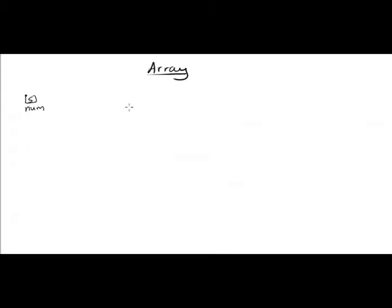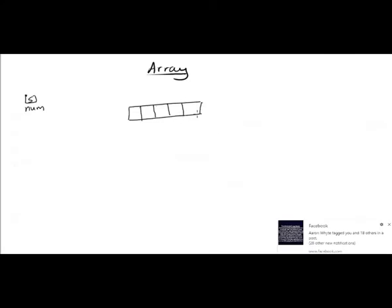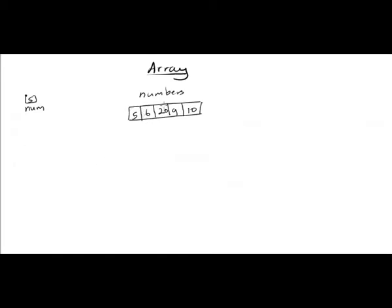This is a graphical representation of how an array is set up. We have an array and we're going to call this array 'numbers' — that is the name of the entire thing. I'm going to put five, six, twenty, nine, and ten inside of it. This array has five values inside of it.